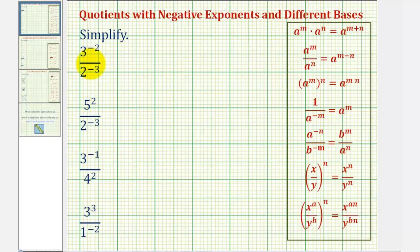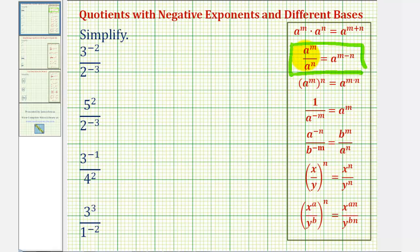Looking at our examples here, notice how the bases are not the same, and therefore we will not be applying the quotient rule of exponents, where a to the m divided by a to the n equals a to the power of m minus n. We cannot use this rule in these quotients because the bases are not the same.